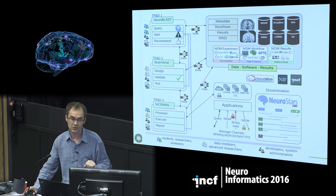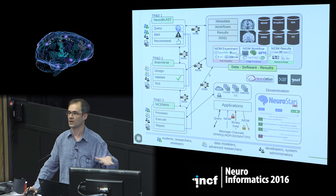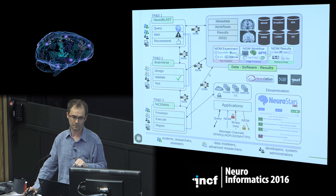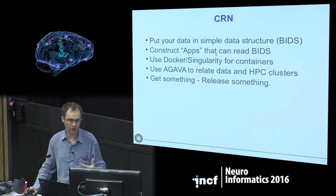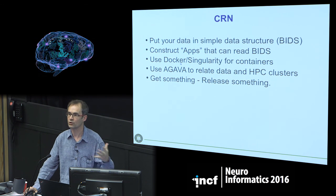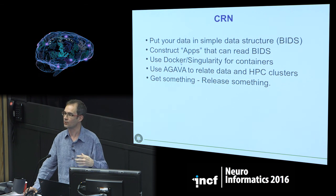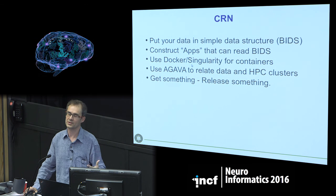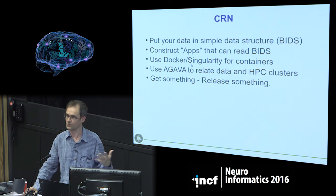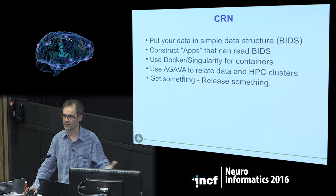CRN - the Stanford-based project - asks you to put your data in a very simple data structure. You construct an app in neuroimaging that knows the format. Then use Docker or Singularity containers - Singularity is much better for security and cluster aspects. Then use platforms to relate data and clusters and get results to publish.